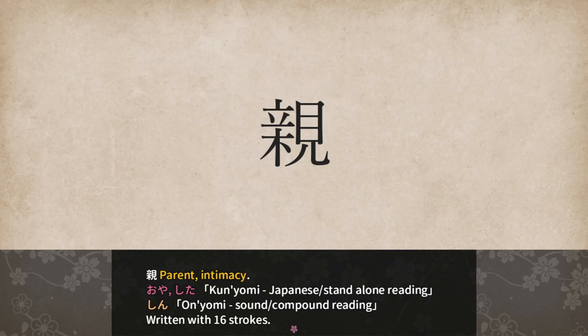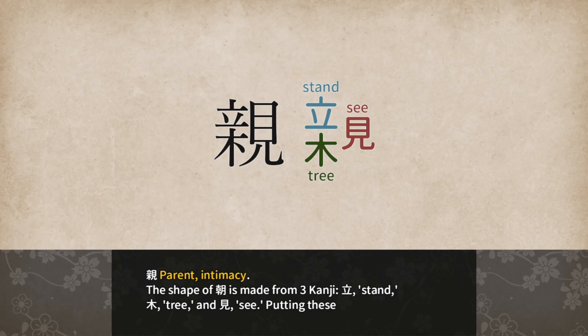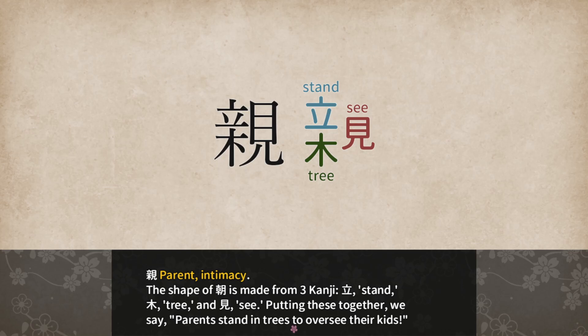Parent or Intimacy: Oya or Shita for Kunyomi, and Shin for Onyomi. Written with 16 strokes. I think they made a little mistake there — they put in the kanji for Asa, morning, instead of for parent. But the shape is made from 3 kanji: Ta (stand), Ki (tree), and Miru (see). Putting these together: parents stand in trees to oversee their kids.